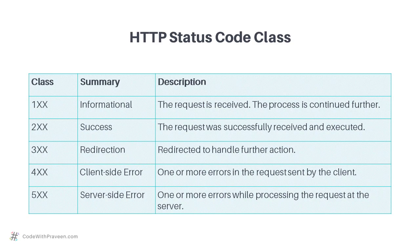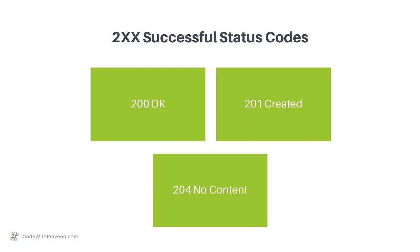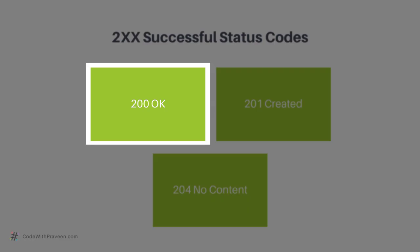Let's look at each of these classes and their commonly used HTTP status codes. First, we have the 2xx class used to capture successful status codes. The 200 OK is used to signify to the client that the request has been successfully received and processed at the server. The 200 OK is the most frequently used status code among all the status codes.